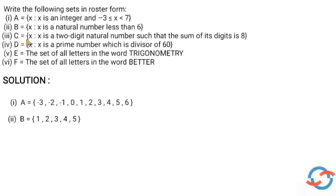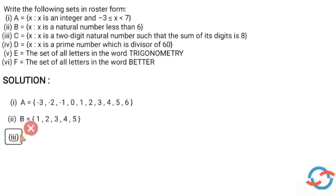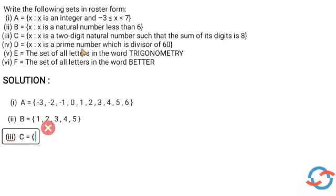The next question: C is equal to the set of all x such that x is a 2-digit natural number such that the sum of its digits is 8. Two-digit natural numbers start with 10 and end with 99.